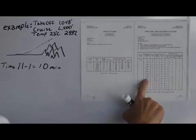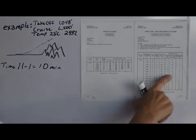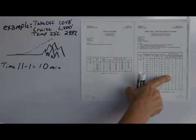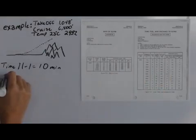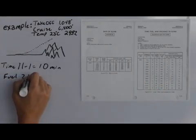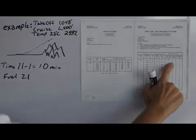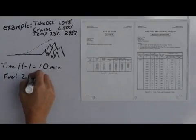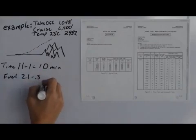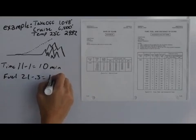The fuel burn, it says that we would have burned somewhere between the 1.9 and 2.3, so we'll call it 2.1, but I would have to subtract off the 0.3 since we started at 1,000 feet field elevation, so we would get 1.8 gallons.